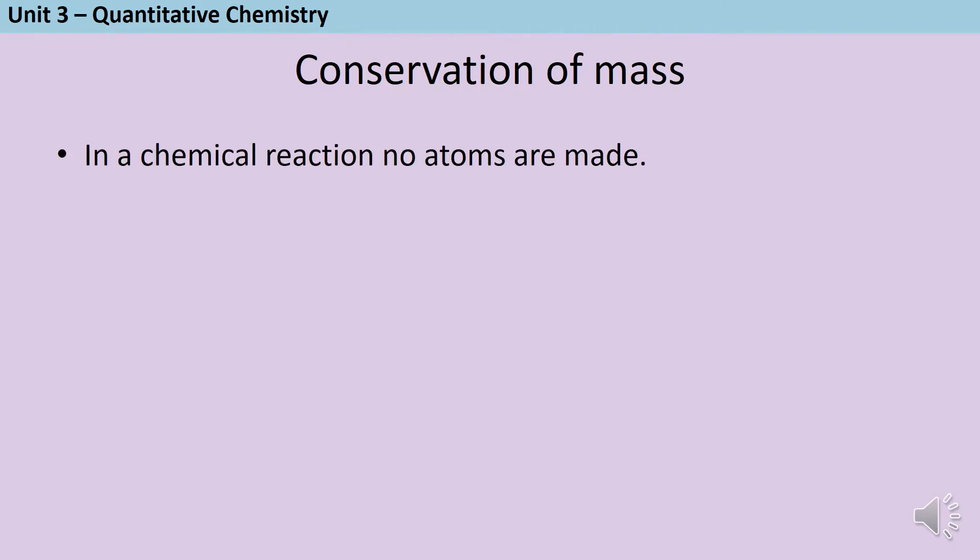We know that in a chemical reaction no atoms are made and also no atoms are destroyed. We must have exactly the same atoms at the end of a chemical reaction as at the start, and that's why simple equations have to balance.